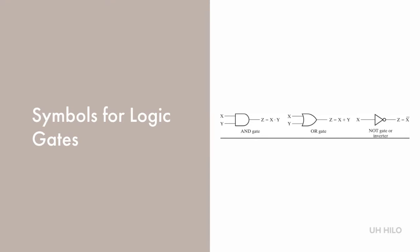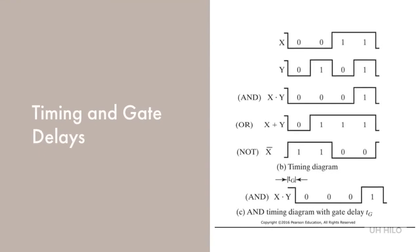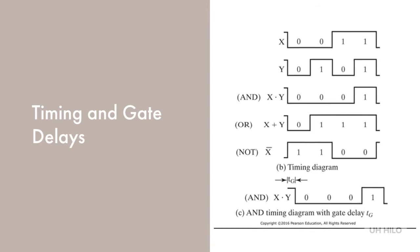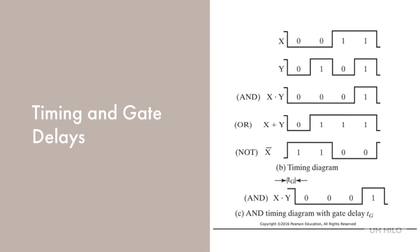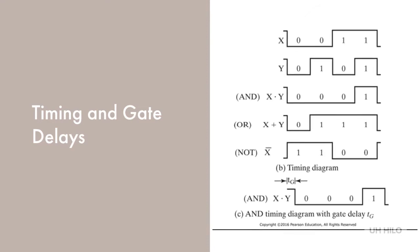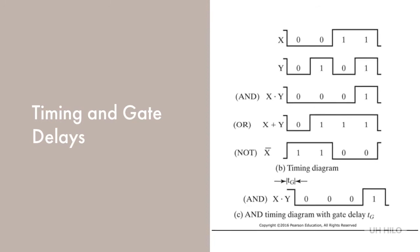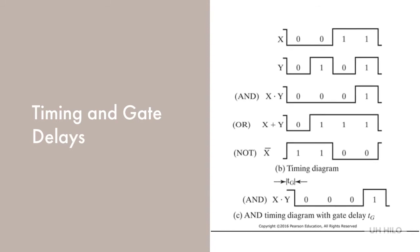Unfortunately, the real world can't be perfect like the pure thought stuff of mathematics, so we have to consider issues of time. In addition to its logic function, each gate has another important property called gate delay. Gate delay is the length of time it takes for an input change to result in a corresponding output change. Gate delays depend on several factors, and even within individual gates, some types of changes can take longer than others. We can simplify a bit and just say that each gate has a delay of T sub G, and shift its waveform accordingly, as in this graphic.